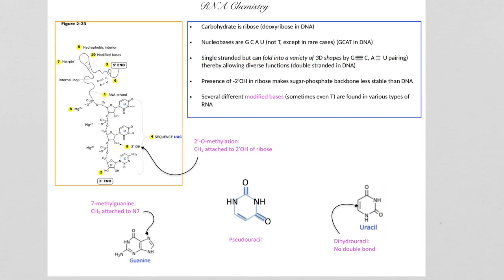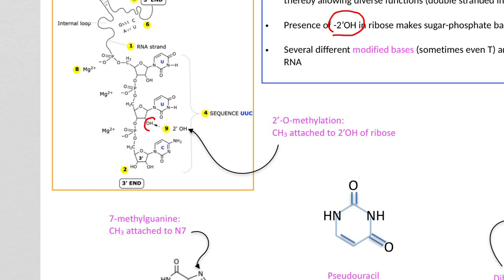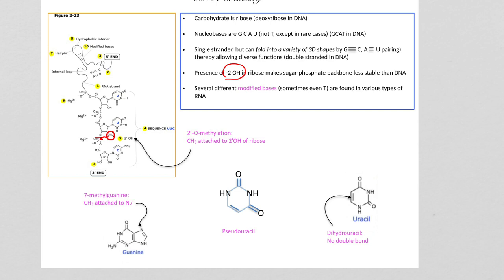DNA does not have the 2' hydroxyl group. However, RNA does have the 2' hydroxyl group, and because of this, the 2' hydroxyl can attack the phosphate and break the phosphodiester linkage. So this is one reason why RNA is much less stable than DNA. DNA is more stable because it is the permanent storage of information. RNA is less stable because we don't want it around too long — it simply does its function and then has to be degraded.